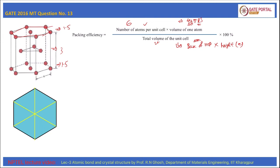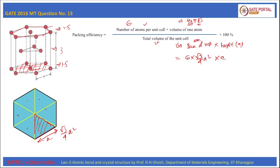The total volume of the unit cell is the base area of the HCP multiplied by the height c. The base area of the HCP consists of six equilateral triangles, each of side a. So the base area is 6 × (√3/4) · a², and the total volume is 6 × (√3/4) · a² × c.